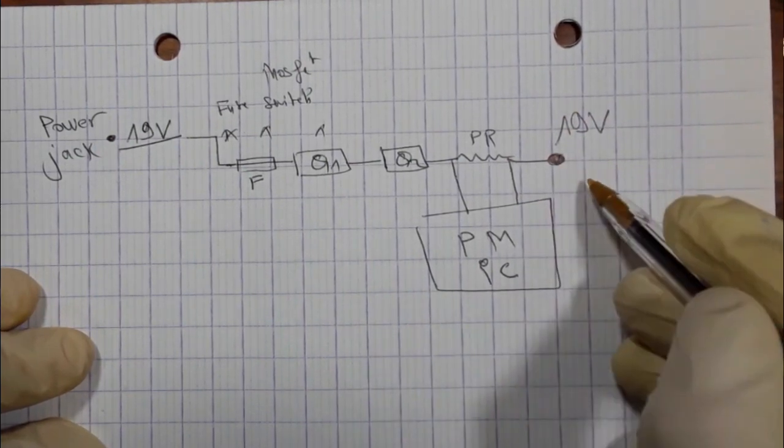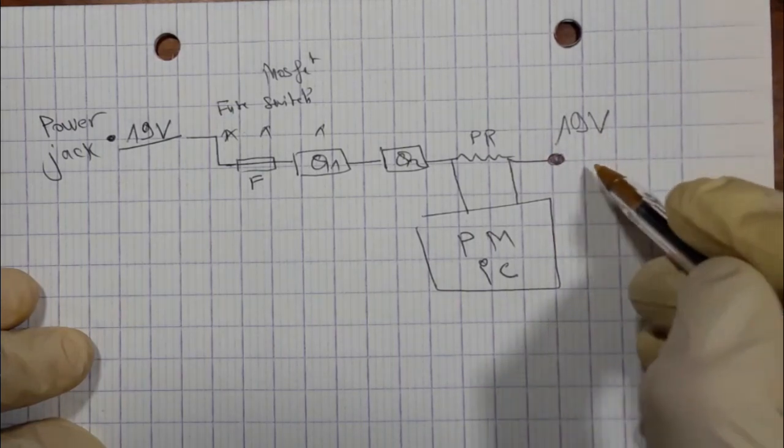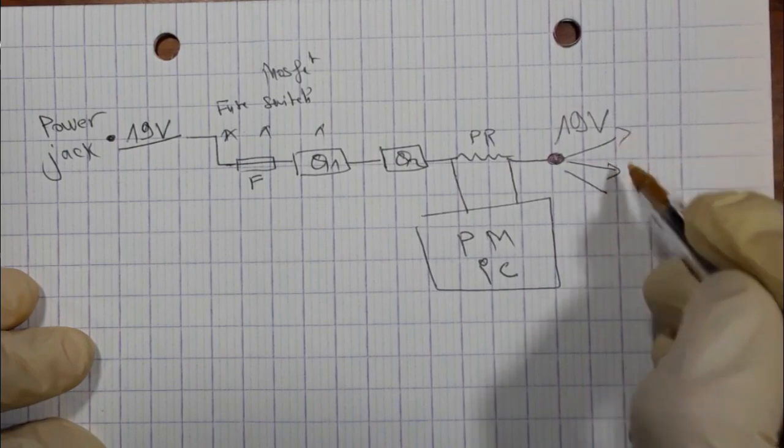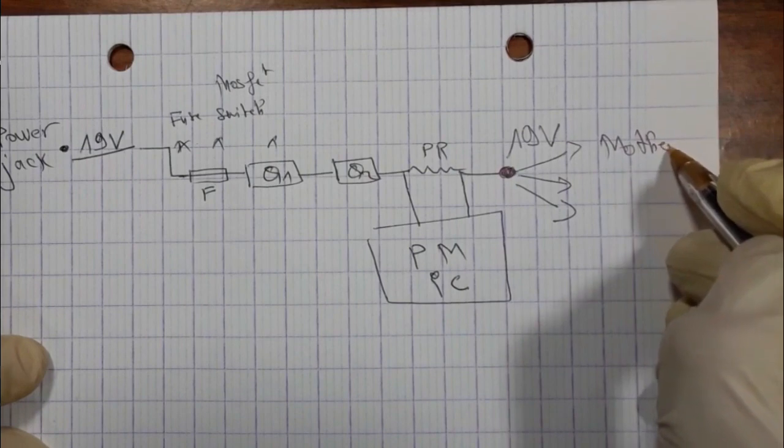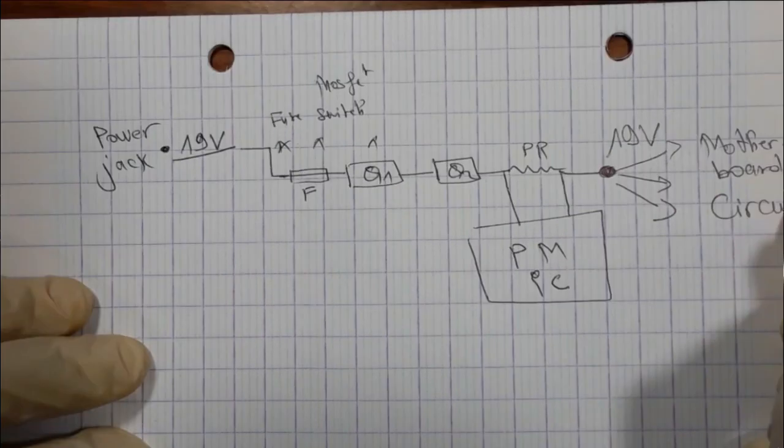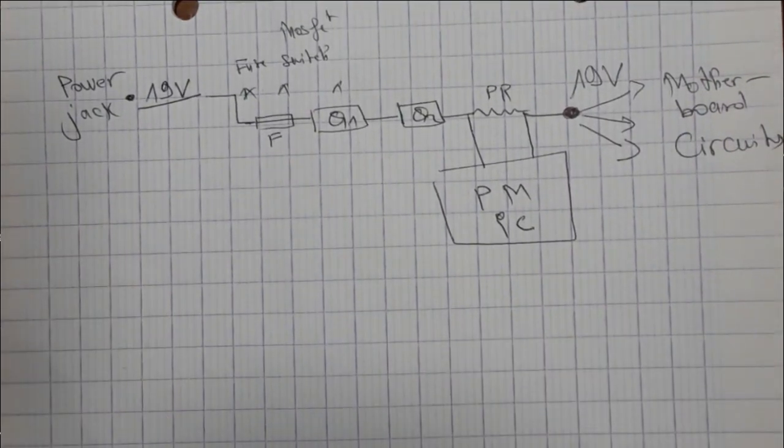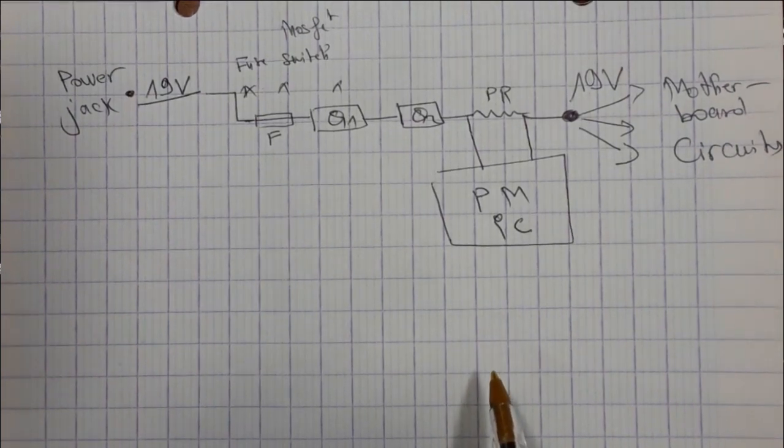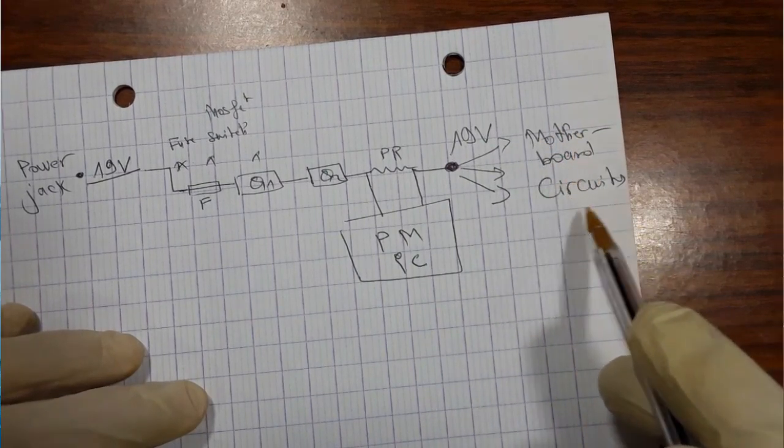This should be connected to a power management IC. Here we will get the main power, 19 volts. This 19 volts should be distributed to the whole motherboard, to the motherboard circuits including processor circuit or CPU circuit, RAM circuit, 3 volt and 5 volt circuit, GMCH circuit, ICH circuit, etc. This 19 volts will be distributed to all motherboard circuits.